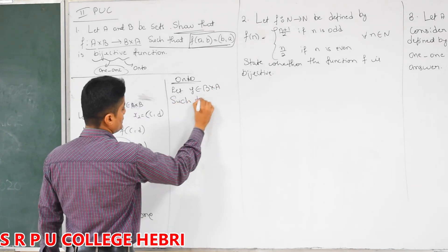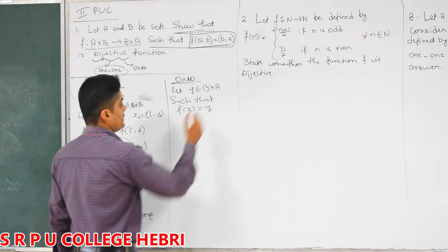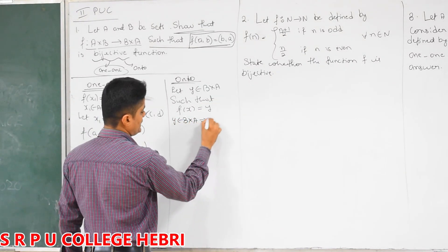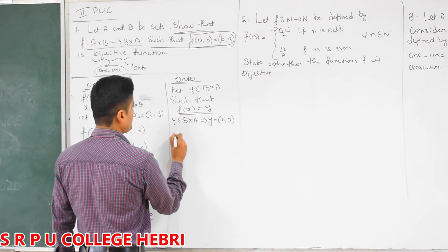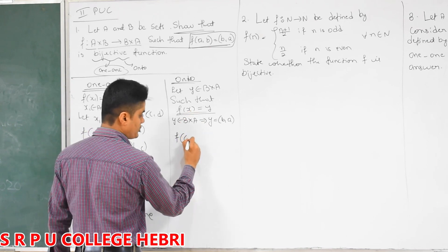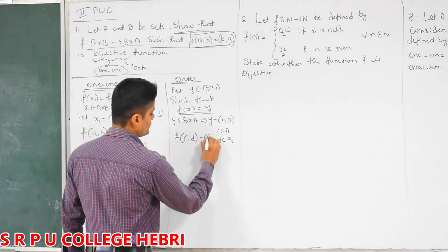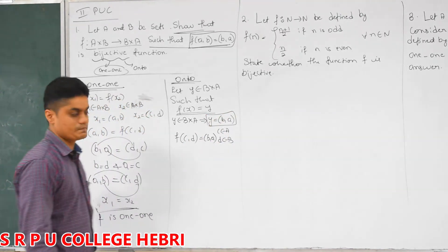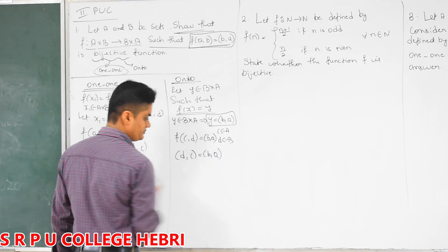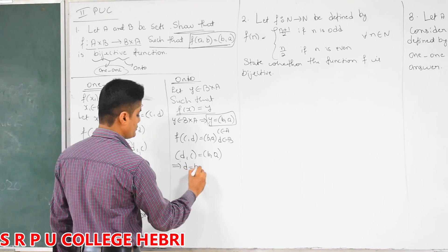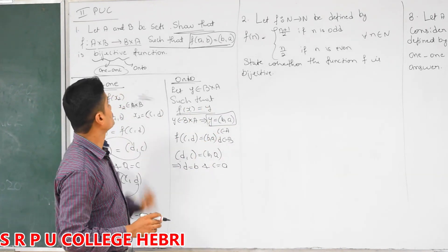Such that f of x is equal to y. Then you must be able to prove that x belongs to the domain. If y belongs to B cross A, then I can take y as (b, a), where b belongs to B and a belongs to A. Let x be (c, d), where c belongs to A and d belongs to B. f of x equals y, and y is (b, a). Now, f of (a, b) swaps position — output is (b, a). When two ordered pairs are equal, this implies d is equal to b and c is equal to a.